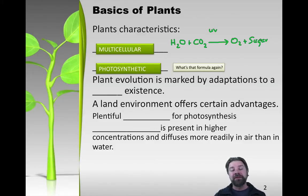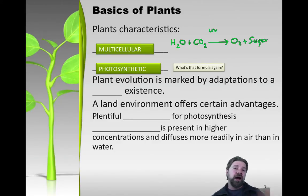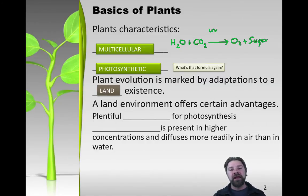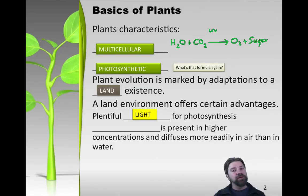Through biological history we know that plants came out of the ocean and eventually inhabited land, so plant evolution is going to be marked by adaptations to a land existence. A land environment offers certain advantages that an aquatic one will not. For example, there's plentiful light for photosynthesis - if you're a plant living underwater, you can only go so far before the light goes away, so there's much more light available on a terrestrial basis.